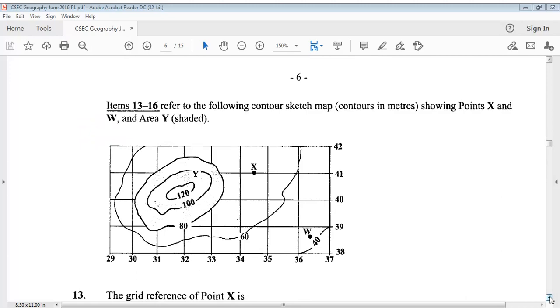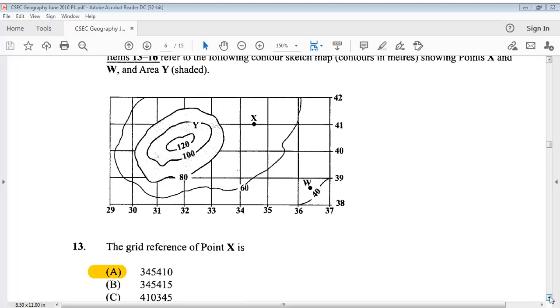Items 13 to 16 refer to the following contour sketch map, contours in meters, showing points X and Y and area Y shading. So there you have it. It says the grid reference of point X is? The answer is A, 3454.